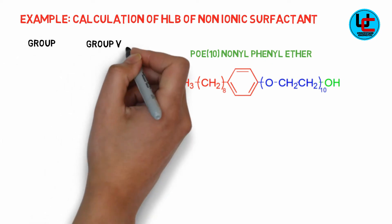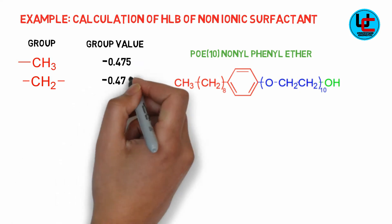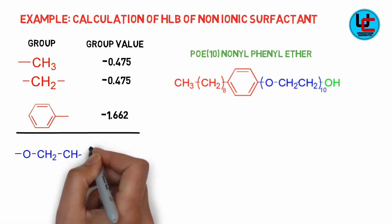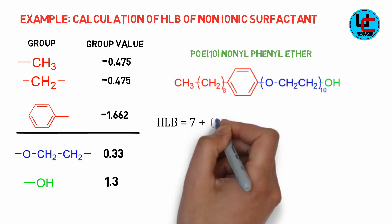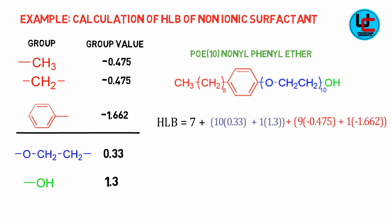The values of different chemical groups in the molecule are shown here. Using these values in Davies formula we obtain value of HLB for this molecule as 6.2. From these examples we see that we must have group values to calculate HLB of a molecule.